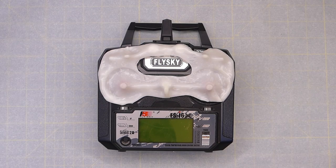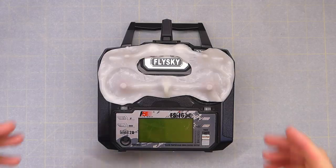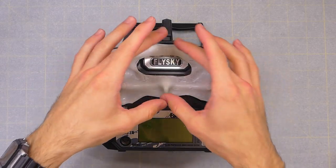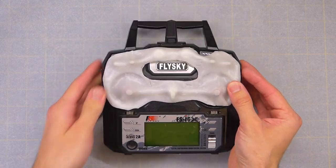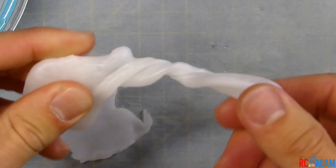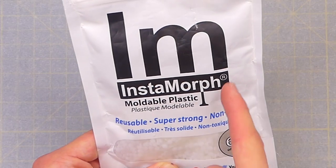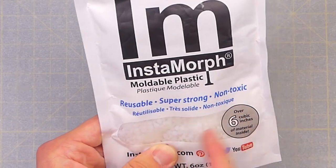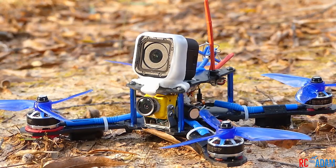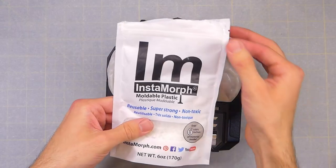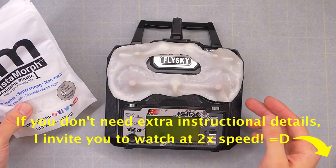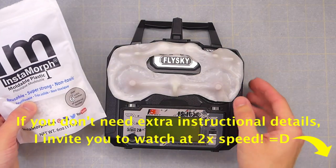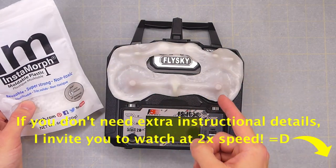Hey everybody, welcome back to RC with Adam. My name is Adam and this is a gimbal protector cover for my radio. I made this using InstaMorph and it's a great alternative to 3D printing if you're not into 3D printing yet but you want to make custom parts. InstaMorph is pretty fantastic and I know some people have had questions about how I made this.